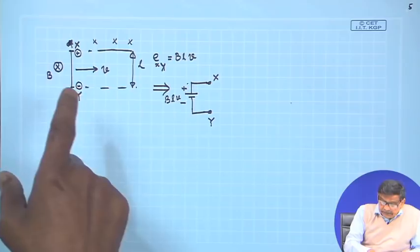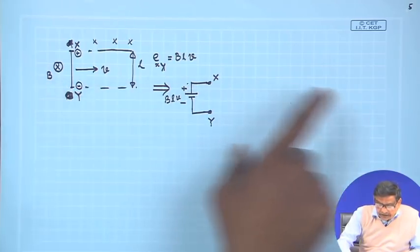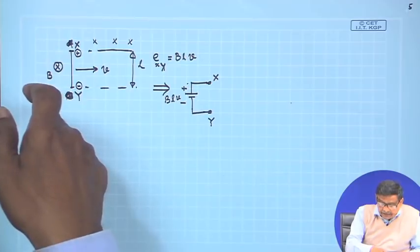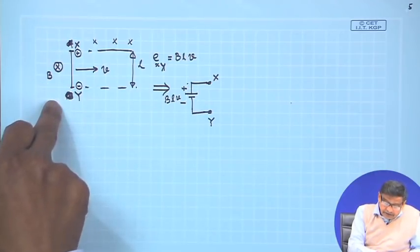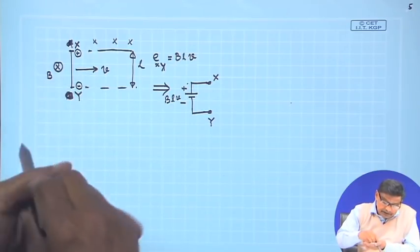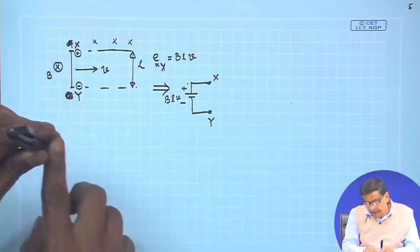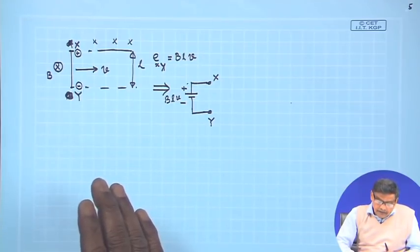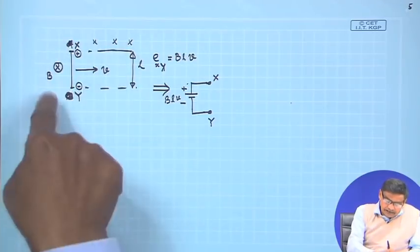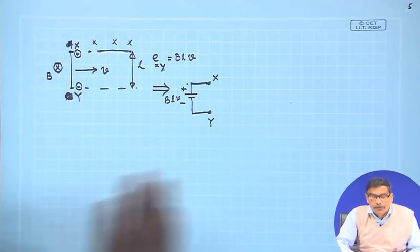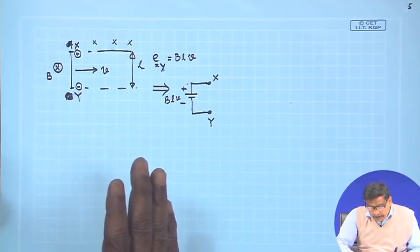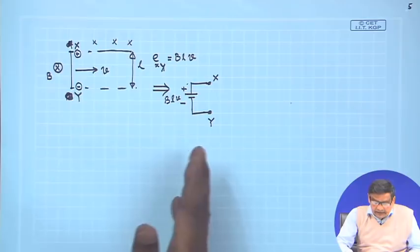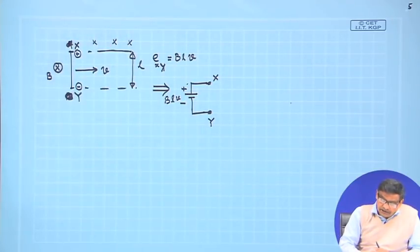A conductor moving at constant velocity V will have an induced voltage provided it is placed in a magnetic field B, and the direction of B and V must be mutually perpendicular — B is into the paper, velocity is this way. If this conductor is moved vertically in the presence of this B, there is no induced voltage, because you must have a perpendicular component of B with respect to V. If that exists, there will be some induced voltage across the points.